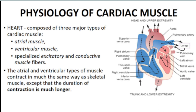The way that atrial and ventricular muscles work is almost similar to how skeletal muscles work, but one of the most notable differences is that the contraction of cardiac muscles is much longer — and there is a reason for that which we will discuss in a while.